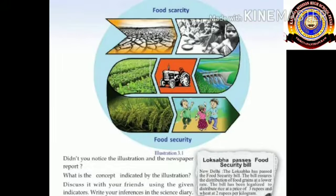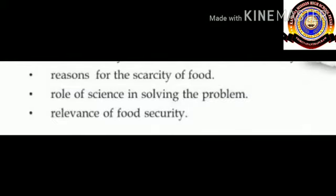Let's start the first part of this chapter. Children, didn't you notice the illustration and the newspaper report? What is the concept indicated by the illustration? The concepts indicated are: first, reasons for the scarcity of food; second, the role of science in solving the problem; and third, the relevance of food security.